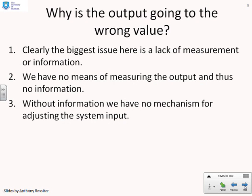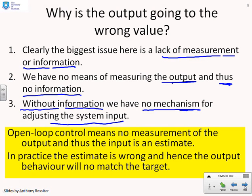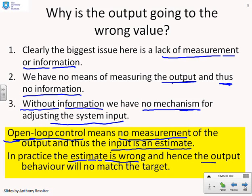So what's wrong? The biggest problem is a lack of measurement information. We have no means of measuring the output and thus no information — we really do not know if the output is correct or incorrect because we're not measuring it. We're making an estimate of the required input, applying it, and it might work or it might not. Without information about the output, we have no mechanism for adjusting the system input. If we can't measure the output we don't know if it's right, and if we don't know if it's right we have no basis to change the input. Open loop control essentially means no measurement of the output, so the input is an estimate that will in practice be wrong.